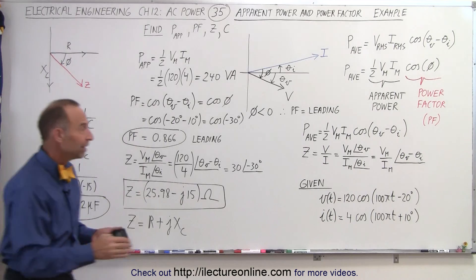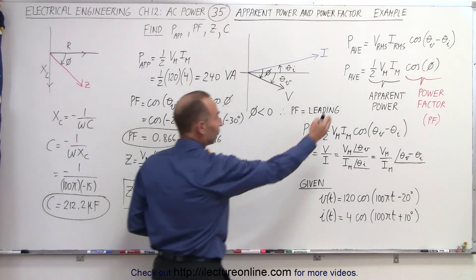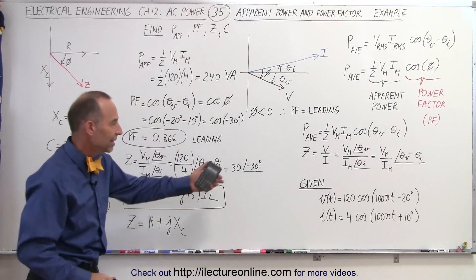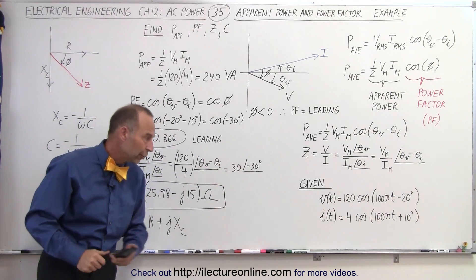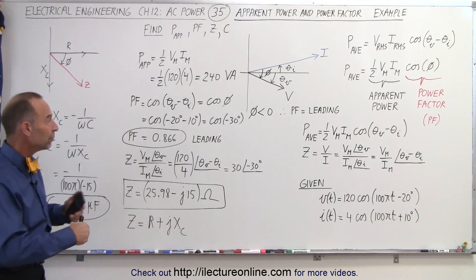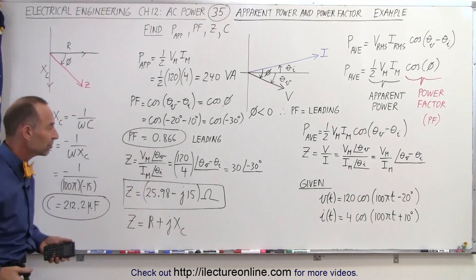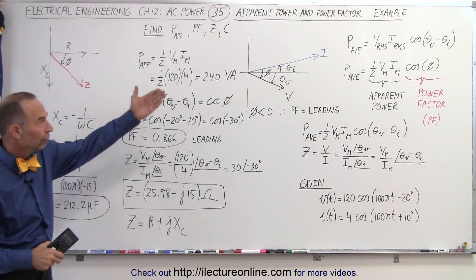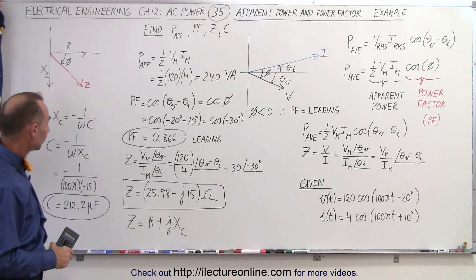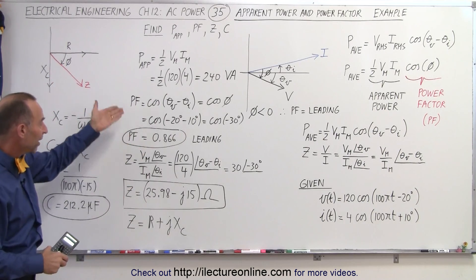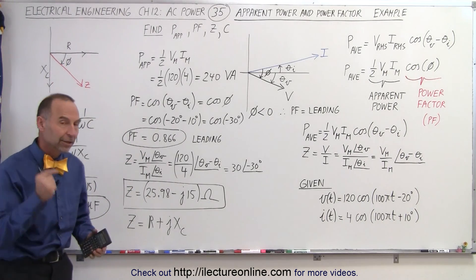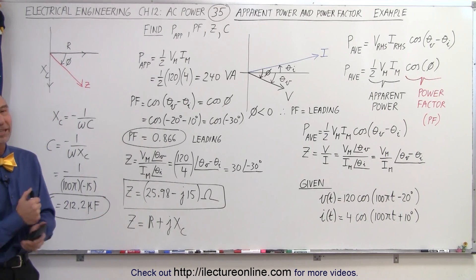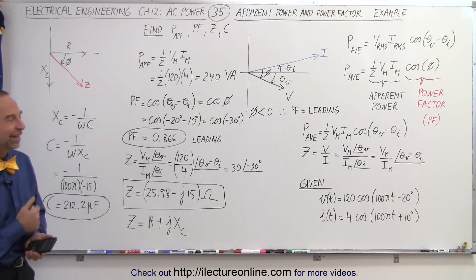Notice that by using these few equations and the concepts of apparent power and power factor, given the voltage and current in the time domain, we can quickly analyze the entire circuit — including the current and voltage phasors, impedance, capacitance, power factor, and apparent power. It's not that bad once you get the hang of it, and that's how it's done.